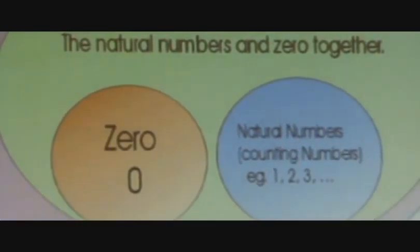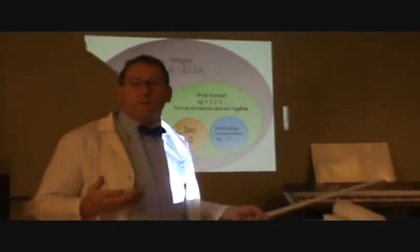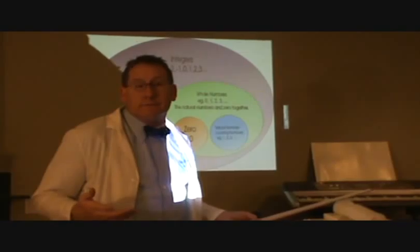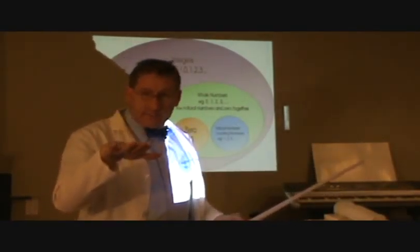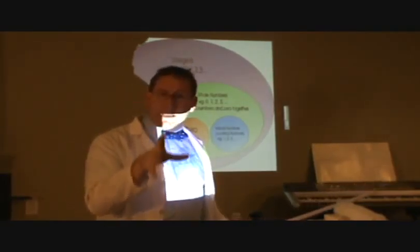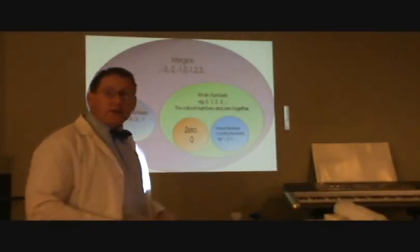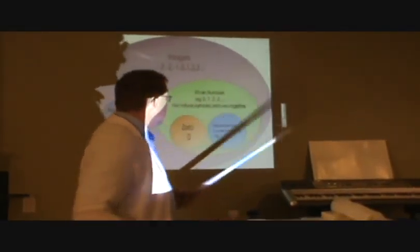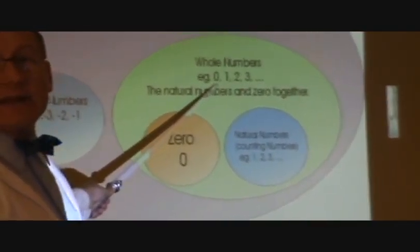Number zero didn't come along until later. They figured, you know, if there's nothing to count, why invent a number about it? Stupid. But hey, they were cavemen. Later on, we did come up with a need to use zero, especially as a placeholder and multiplying by ten. So, we had a new system of numbers come about. Brilliant invention. Take the counting numbers, add a zero to the beginning of them. What do you get? You get a number system called the whole numbers.